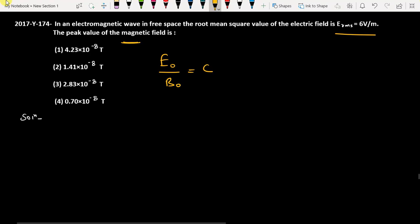We also know that E_rms is E_0 by root 2, so from here we can get E_0, that will be E_rms times root 2. So the peak value of the electric field is going to be 6 root 2 volt per meter.